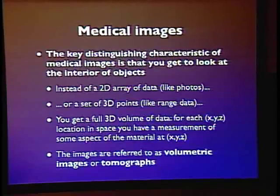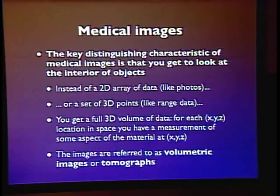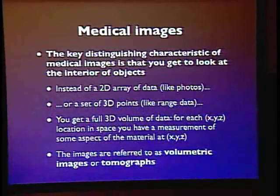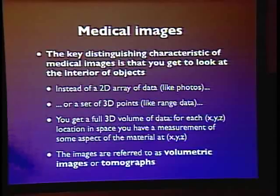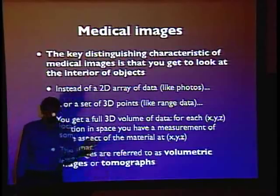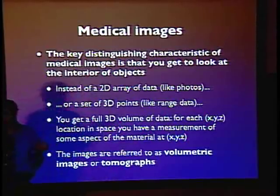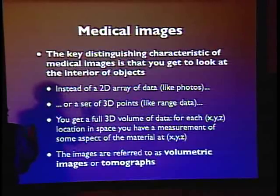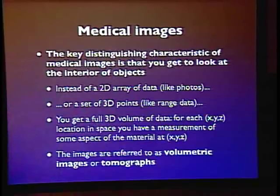For every 3D position in this Rubik's Cube part of the world, you get a number that tells you something about the characteristics of the material at that location. The point is that it's filled in. These are often referred to as volumetric images — instead of just a surface, you have a filled-in volume of material. They're also referred to as tomographs, and various techniques are called blah-blah tomography.